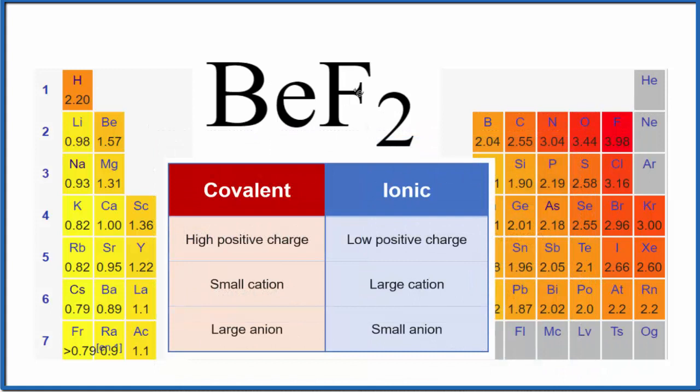First off, we look at the charge beryllium will form when it becomes an ion, and that's two plus - a fairly high positive charge. Beryllium is also a small cation, so that makes us think maybe covalent as well. And then fluorine - that's a fairly small anion. But most of the evidence here is pointing towards beryllium fluoride being a covalent compound.